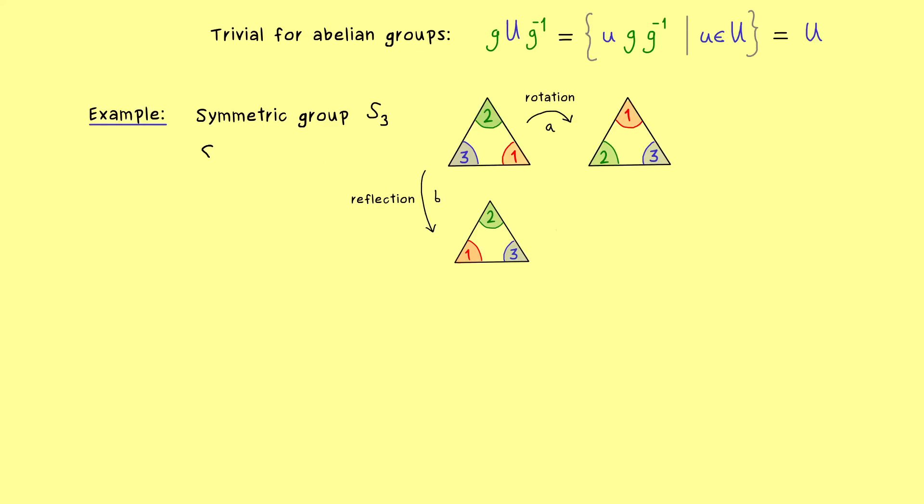On the other hand equivalently we can also describe S3 with this rotation and reflection operation. In this case the six elements of our group can be written down. First the identity, then a, then b, then a squared, a times b and b times a.